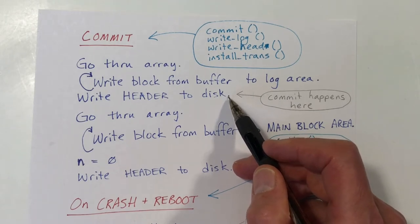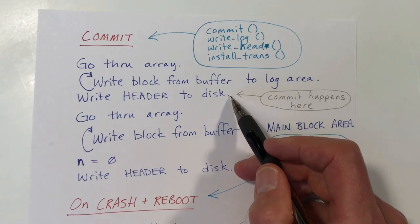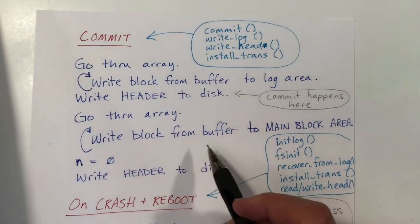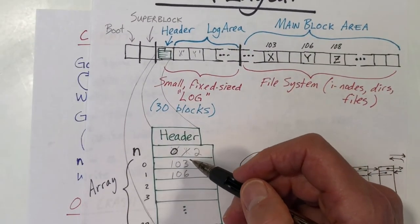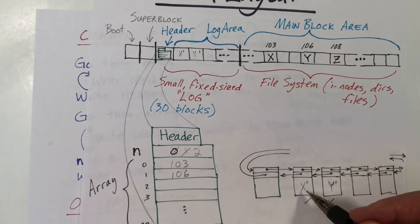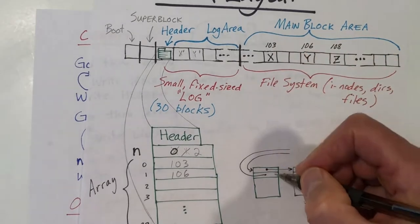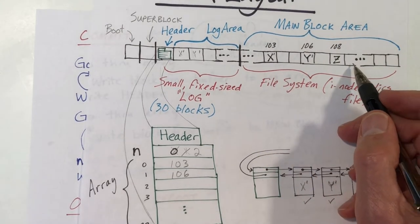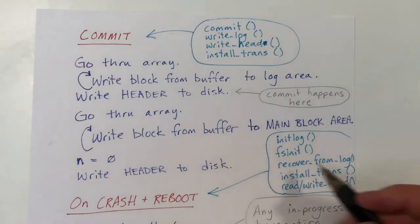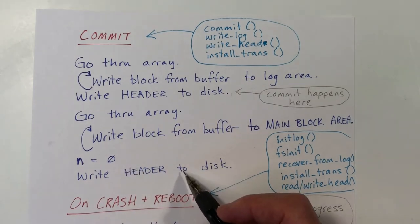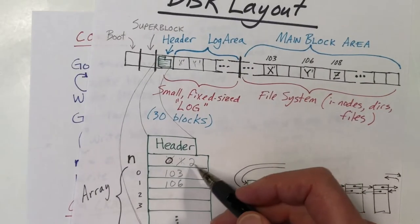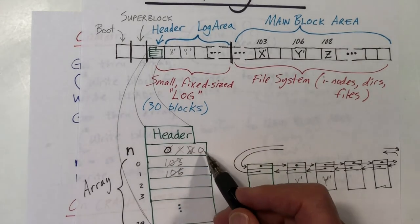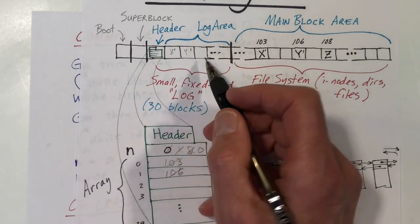After the header has been updated on disk, we go through the array again and write each block to the main block area — writing x-prime and y-prime back to disk. So now the main block area has the updated versions of both blocks. Then we update the counter to zero and write the header to disk a second time. The data is still in the log but is no longer needed. The commit operation is done in several different functions: commit, write_log, write_head, and install_trans.